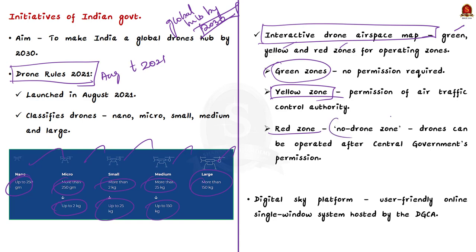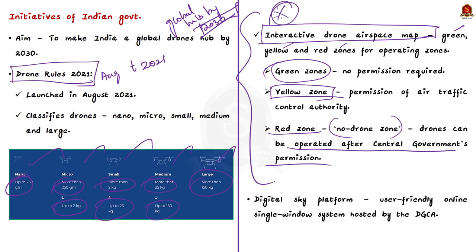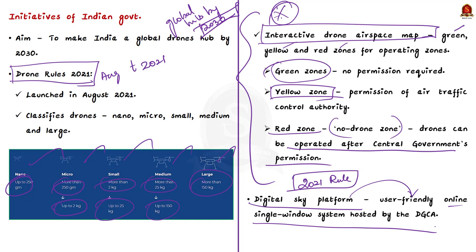Make note of these changes since the drone sector in India may attract exam questions. Under the 2021 rules, the Digital Sky Platform was also developed — a user-friendly, online, single-window system hosted by the Directorate General of Civil Aviation.